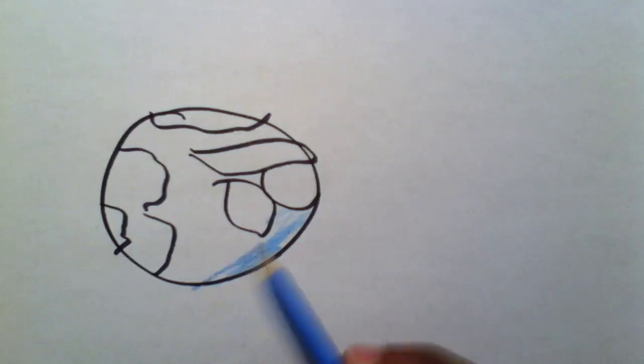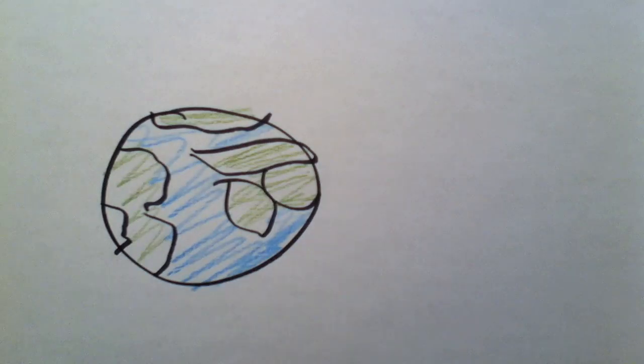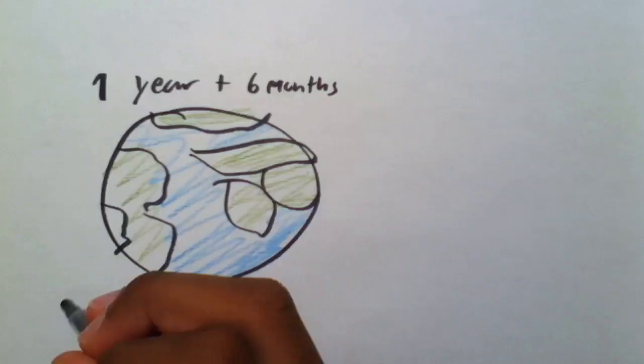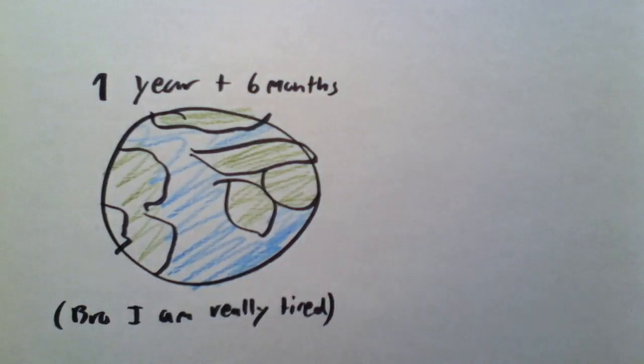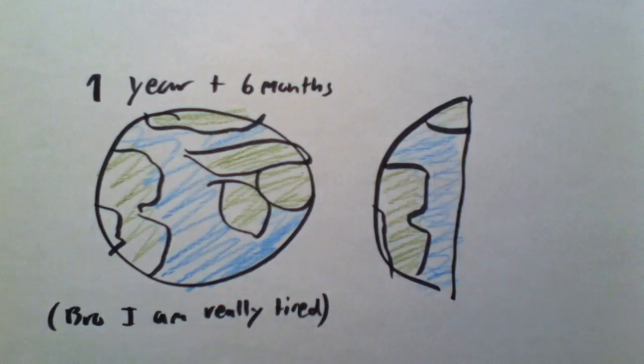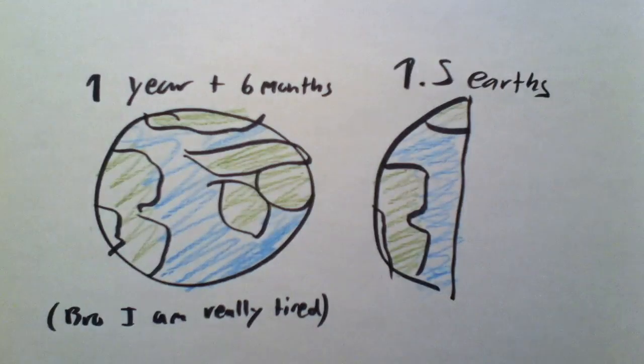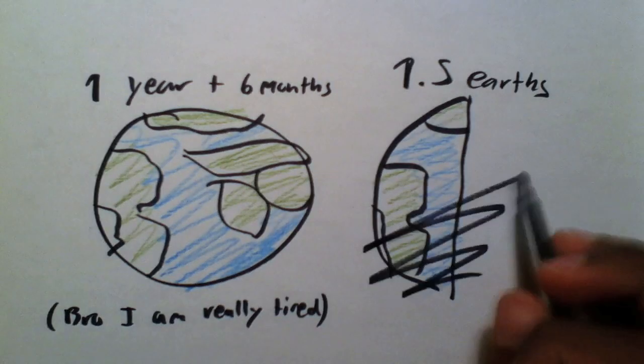Ecological overshoot occurs when humans turn products into waste before the earth can regenerate those products. In our current state, it takes the earth one year and six months to renew what we use in only one year. Basically, we are using one and a half planets worth of materials and storage when we only have one to work with.